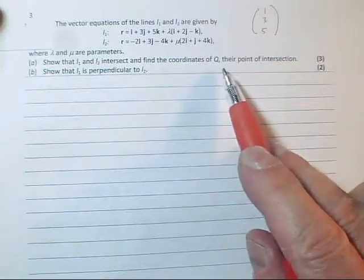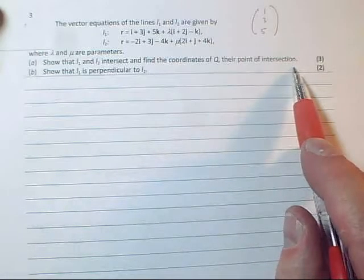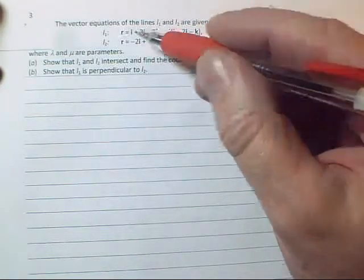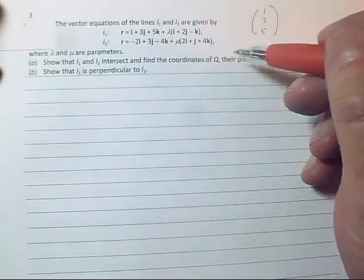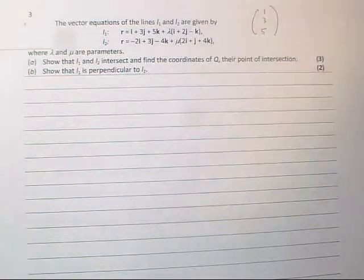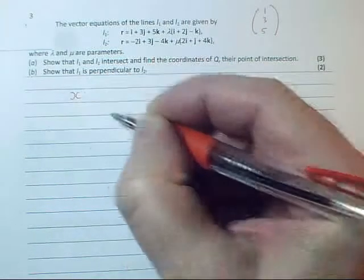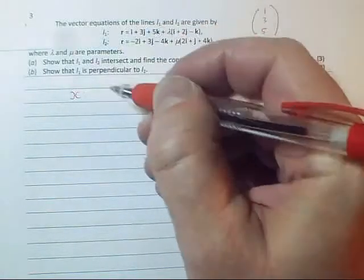So we need to show they intersect and find the coordinates of their point of intersection. So the whole point of an intersection is that the equation for L1 gives the same point as the equation for L2. No extra clues are given this time. So you're going to take the x bit of each equation, and you're going to have something with lambdas in it.